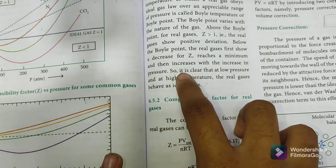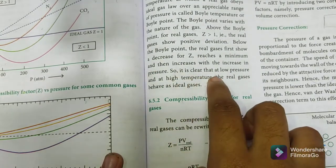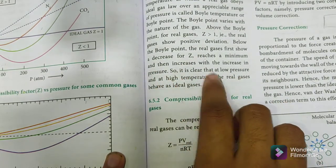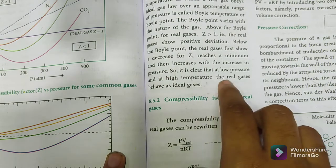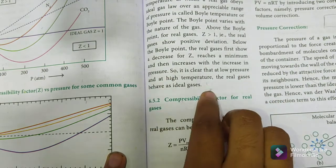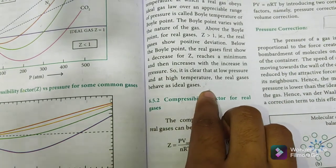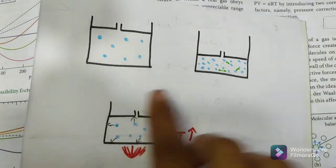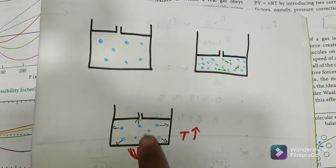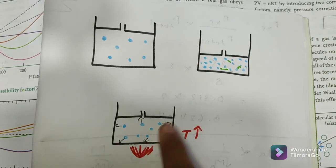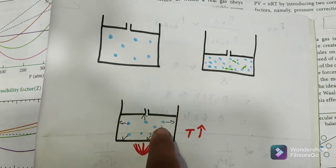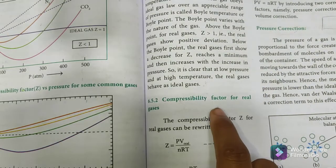It is clear that at low pressure and high temperature, the real gases behave as ideal gases. At low pressure and high temperature, real gases behave as ideal gases.